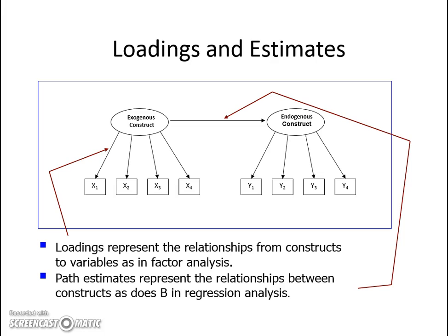The exogenous construct is manifested as the combination of these four variables, which is why you have a relationship going out of the exogenous construct to each of these variables. Similarly, there is another set of variables for the endogenous construct, with directed arrows coming out of the endogenous construct to its four variables. There is also a directed arrow from the exogenous construct to the endogenous construct — this is what we call a path estimate, a path from an exogenous construct to the endogenous construct.